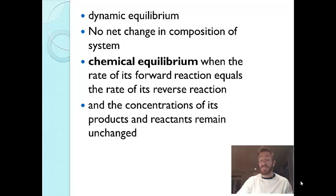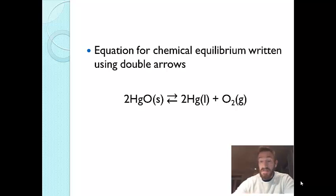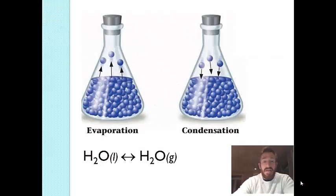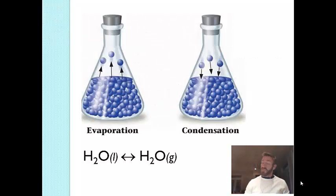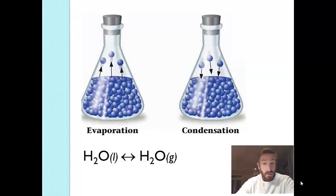The concentrations are not equal, but they're going to be constant. For equilibrium reactions, we use double arrows, meaning the reactants can form the products but the products can also go back and reform the reactants. Let's think about not only reactions but also physical changes. We know evaporation is when a liquid goes to gas, and condensation is when a gas goes to liquid. These two processes can occur at the same time and occur in equilibrium.